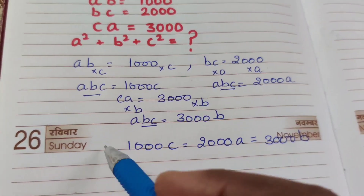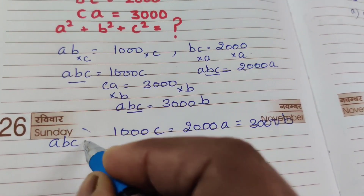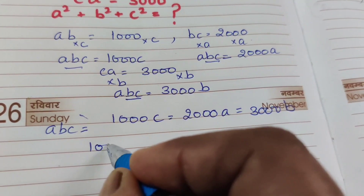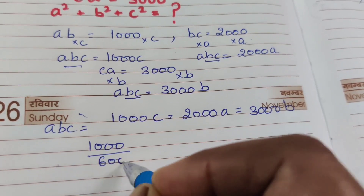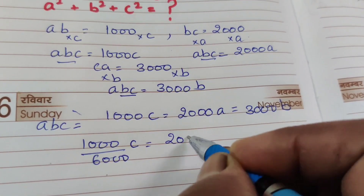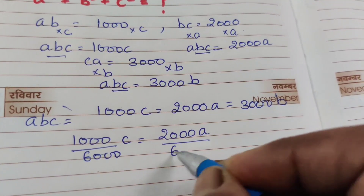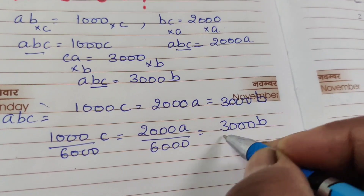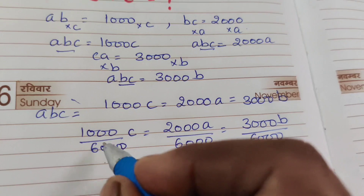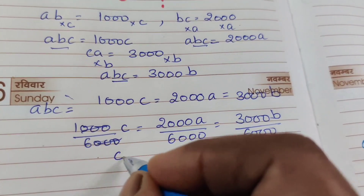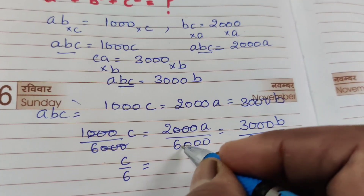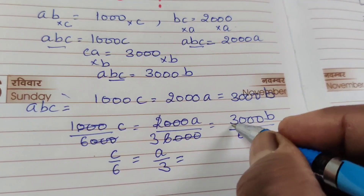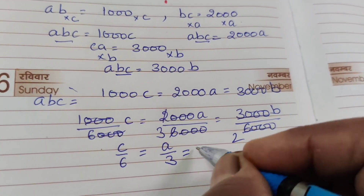These are all equal. Now divide each part by 6000. 1000C divided by 6000 gives C by 6; 2000A divided by 6000 gives A by 3; and 3000B divided by 6000 gives B by 2. After cancelling, we have C/6 equal to A/3 equal to B/2.